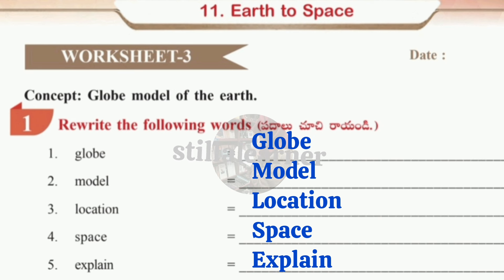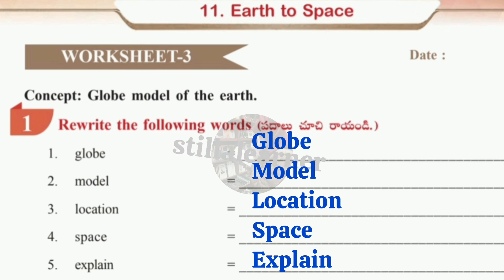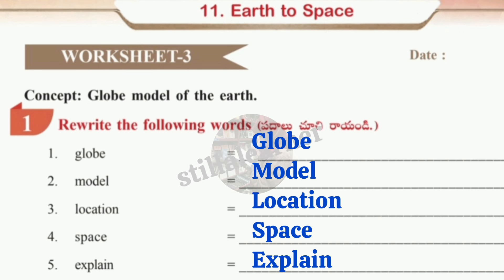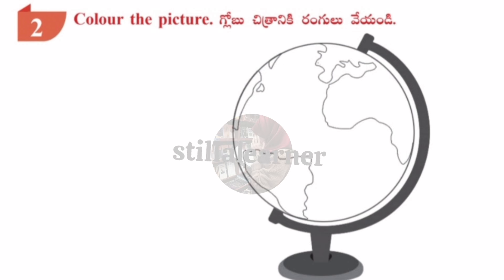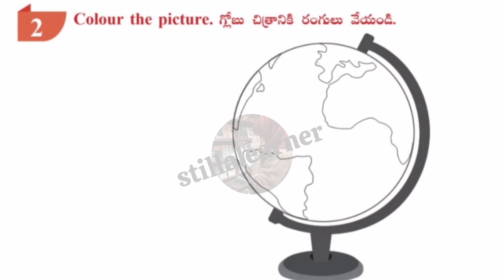Worksheet number three, Roman numeral one: rewrite the following words — Globe, Model, Location, Space, and Explain — making sure the starting letter of each word is a capital. Roman numeral two: color the picture of the globe given.